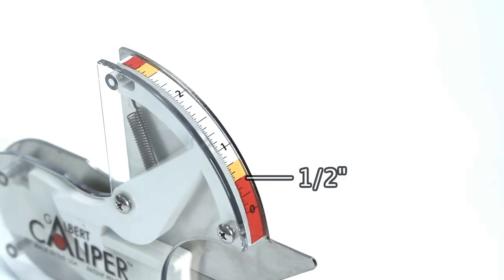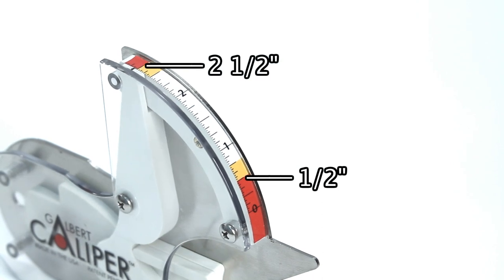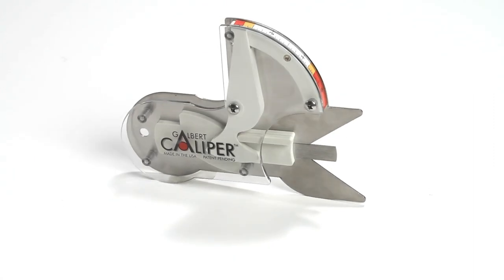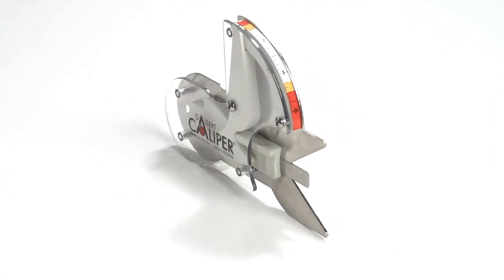Able to size work from a half inch to two and a half inches in diameter, the Galbert Caliper features an easy to read scale with an ergonomic design making it easy to hold securely in position during use.